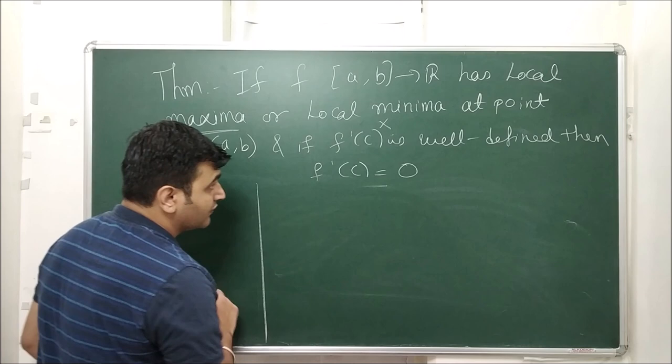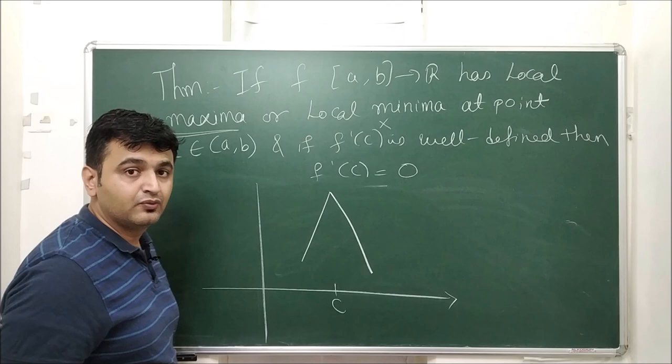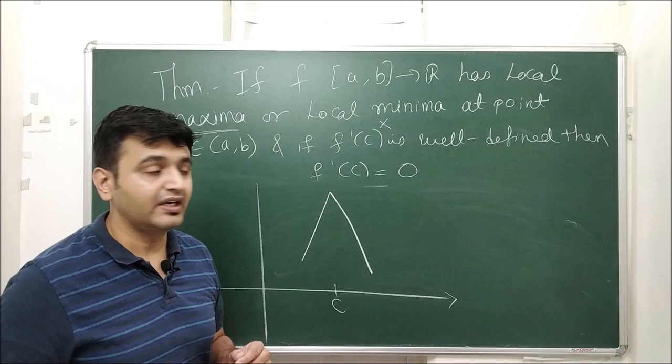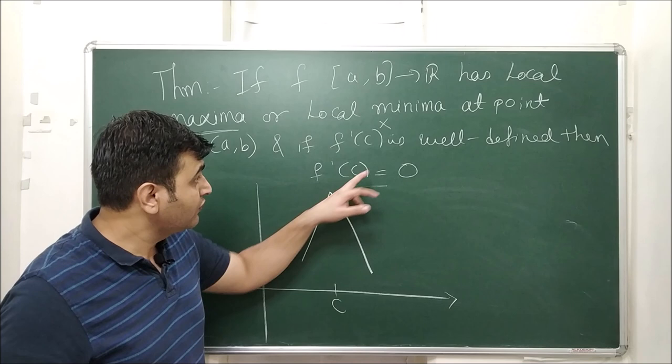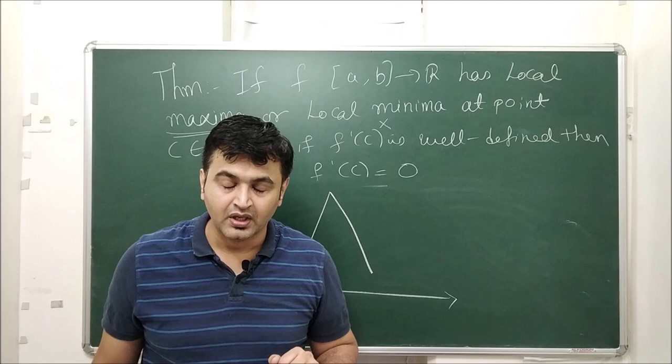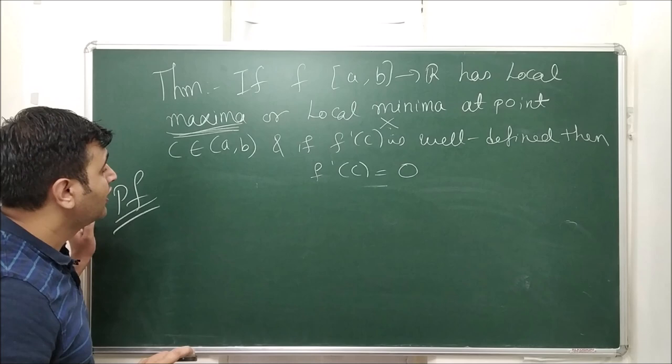One important caveat: f'(c) must be well-defined to make this claim. If the derivative does not exist — for instance at a sharp point on the graph — you cannot say the derivative is 0. Sharp points make a function non-differentiable, as discussed in the differentiability lecture. So we need the derivative to exist first. Now let's prove this result; I will prove the case for local maxima, and the minima case will be left as homework.